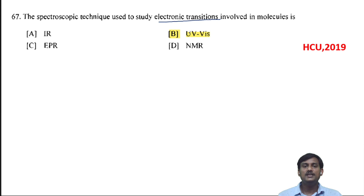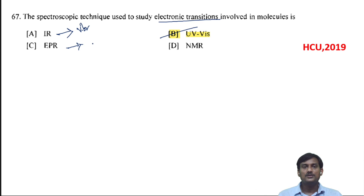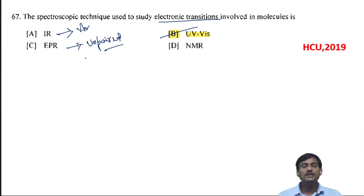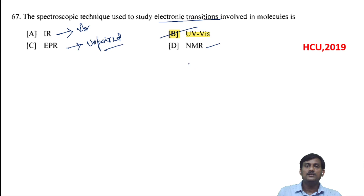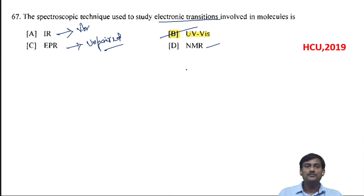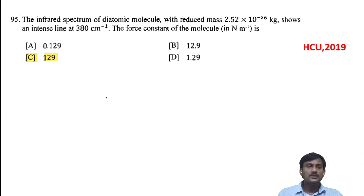Electronic transitions are studied in UV-vis spectroscopy. IR studies vibrations. EPR studies the spin of unpaired electrons — molecules with unpaired electrons can be detected by EPR. NMR studies how many non-equivalent protons there are and the chemical environment of a proton. Electron transitions take place in UV-visible spectroscopy.